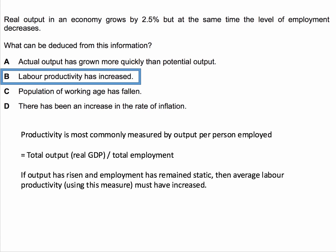We normally measure productivity — which is a measure of efficiency — by output per person employed. The simple formula is total output, or real GDP, divided by total employment. We're told that output has gone up, and if output has risen and employment has fallen, then average labour productivity must have increased — output per worker must have gone up. So that's why the answer to this question is B.